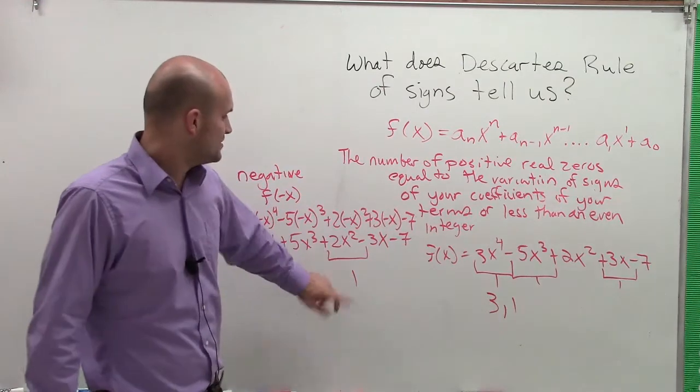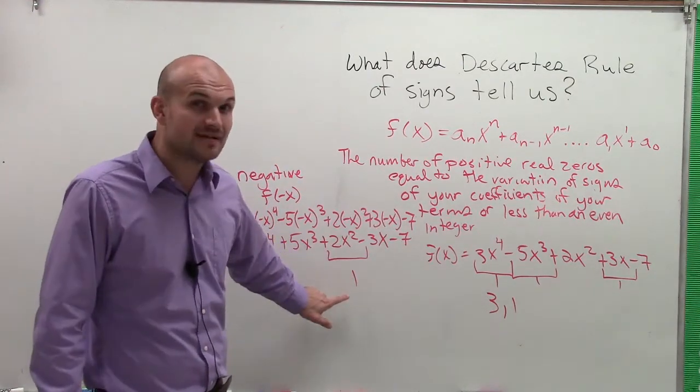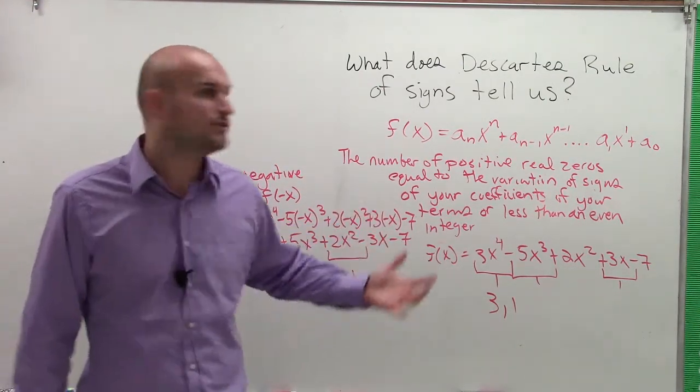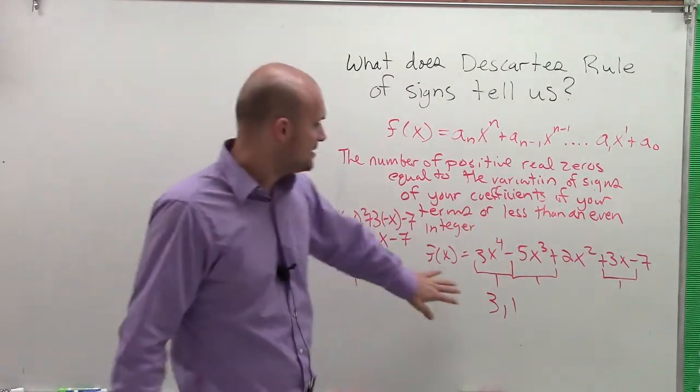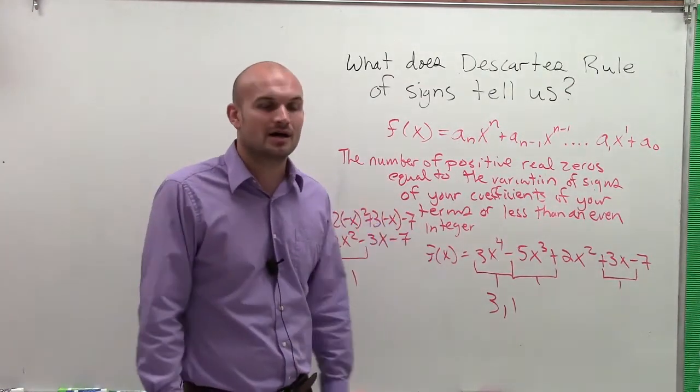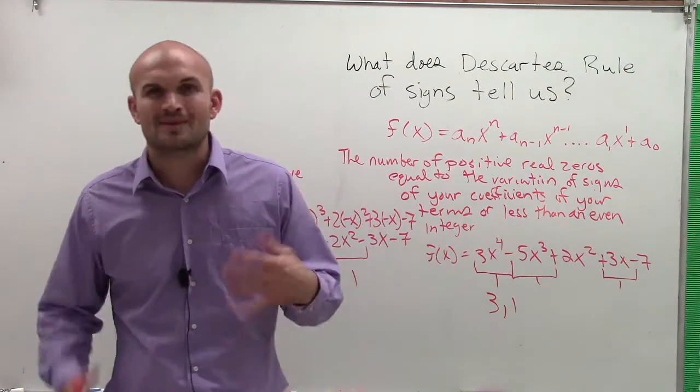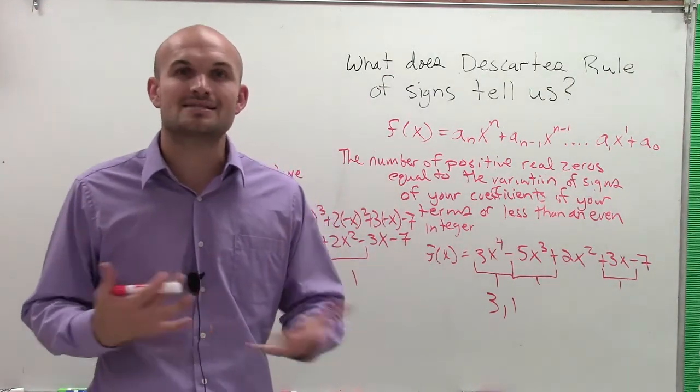It also helps if you do synthetic division. If you already find, if you do synthetic division and you already have a negative zero, then you don't need to continue trying synthetic division for all the negative answers. Just continue, now search, looking for the positive zeros that you can use. So that's what helps, that's what Descartes' Rule of Signs allows us to do.